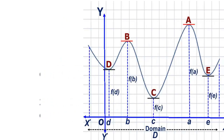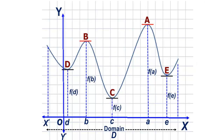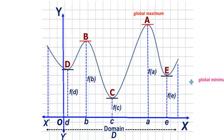Now observe the following graph. In this graph, we find that the point A is the highest point on the curve because the ordinate f(a) is greater than all other ordinates. Hence, we call f(a) as the global maximum value and A is the global maximum point. Similarly, the point C is the lowest point of the graph because the ordinate f(C) is the smallest of all other ordinates of the other points on the graph. Therefore, we call f(C) as the global minimum value and C is the point of global minimum.